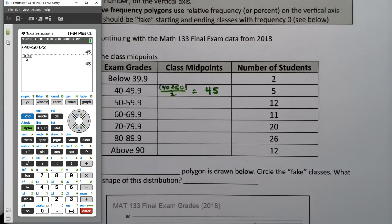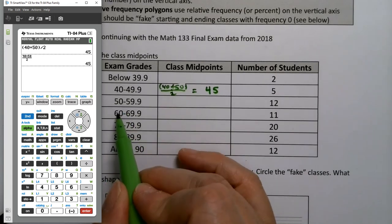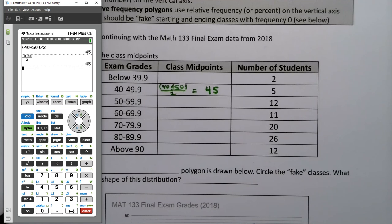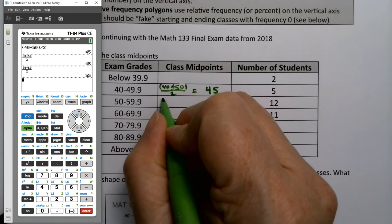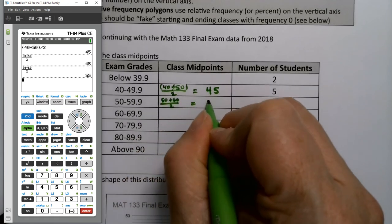Now, I can do that again for the next one. So this next one would be 50, and then the next lower class limit is 60. 50 plus 60 divided by 2 is 55. I can prove it. Alpha, Y equals, number 1, 50 plus 60 divided by 2, enter, 55. So if you want to write that, you can, but you don't need to because there's another way to do this.